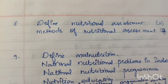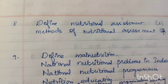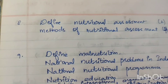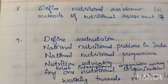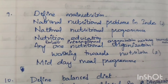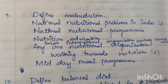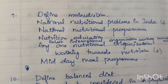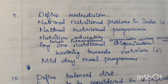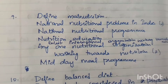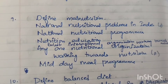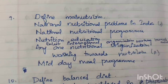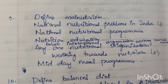Next: Define nutritional assessment — 2 times. Methods of nutritional assessment — 4 times. Then: define malnutrition. National nutritional problems in India — 2 times. National nutritional programs — 1 time.